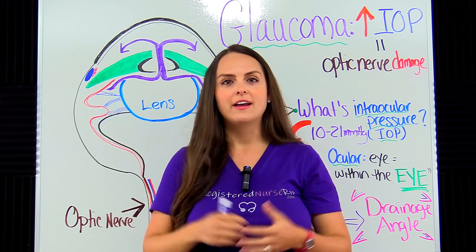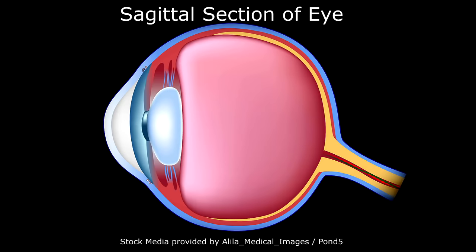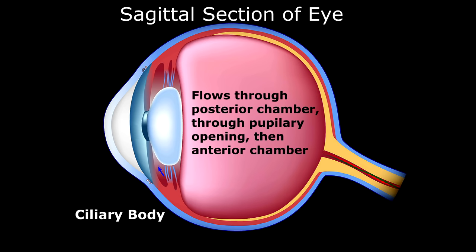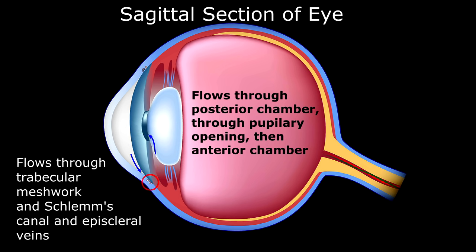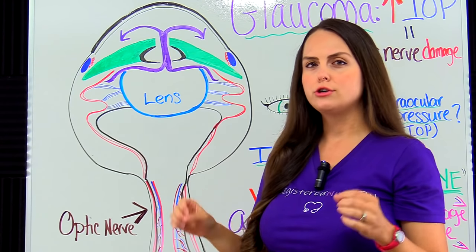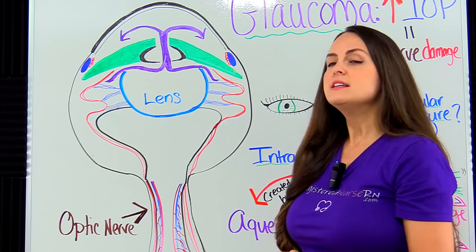To give you a better illustration, let's look at this animation. Here is a side view of the eye. Circled in red is the ciliary body, which produces the aqueous humor. It flows out through the posterior chamber, through the pupillary opening, through the anterior chamber, and then down into the trabecular meshwork, into Schlemm's canal and the episcleral veins. As you can see, this aqueous humor is easily flowing through the eye.